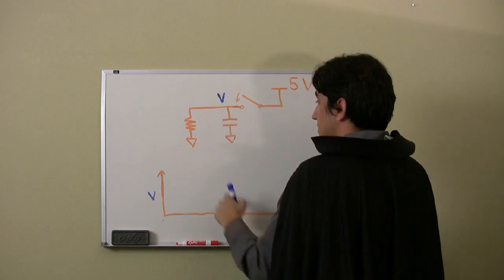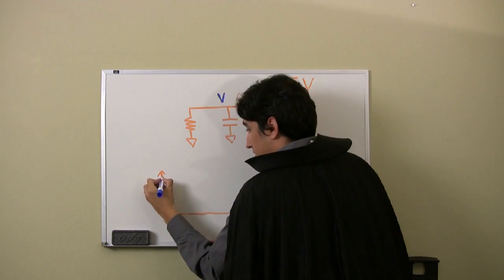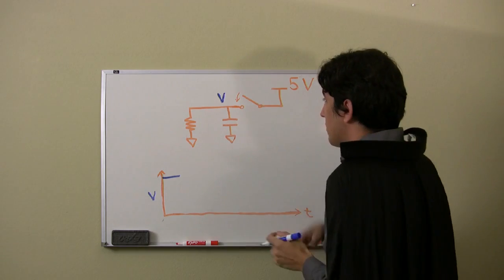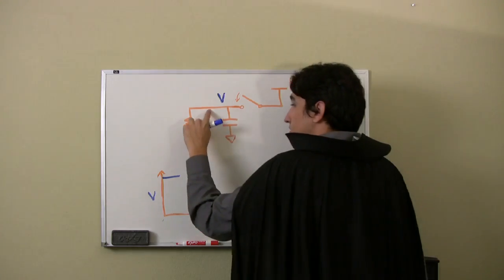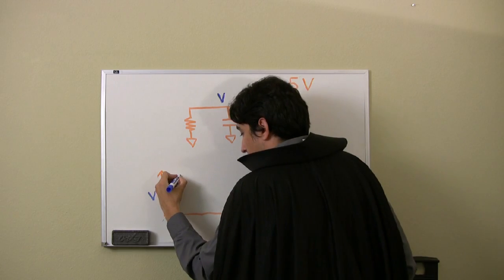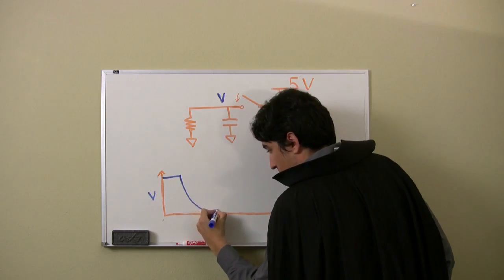When I close the switch, it's going to charge the capacitor up to 5 volts. Then when I open the switch, it's going to let the capacitor discharge through this resistor over time.